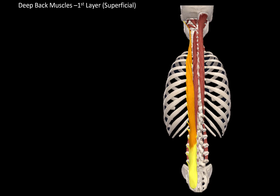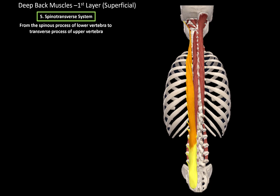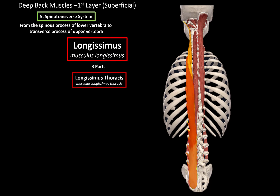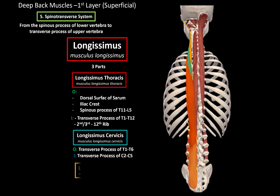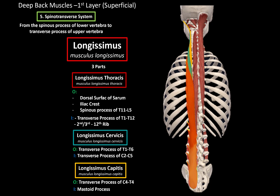Then there's the spinotransverse system, which are fibers going from the spinous process of the lower vertebrae to the transverse process of the upper vertebrae — these are the longissimus muscles, with three parts. The longissimus thoracis originates from the dorsal surface of the sacrum, the iliac crest, and the spinous process of T11 to L5, inserting at the transverse process of T1 to T12 and the costal angle of the ribs. The longissimus cervicis originates from the transverse process of T1 to T6 and inserts at the transverse process of C2 to C5. The longissimus capitis originates from the transverse process of C4 to T4 and inserts at the mastoid process.